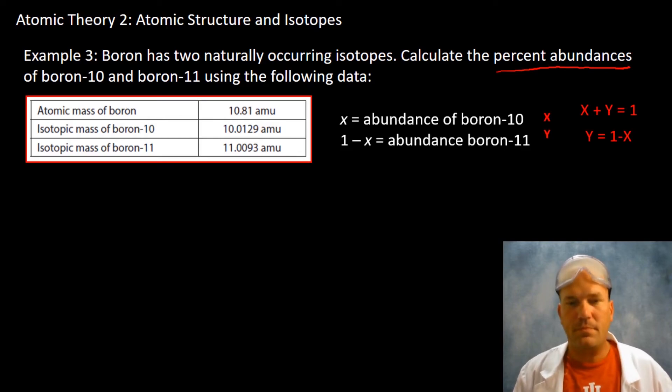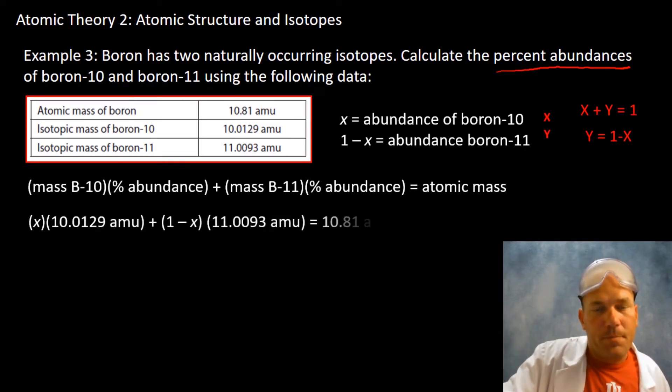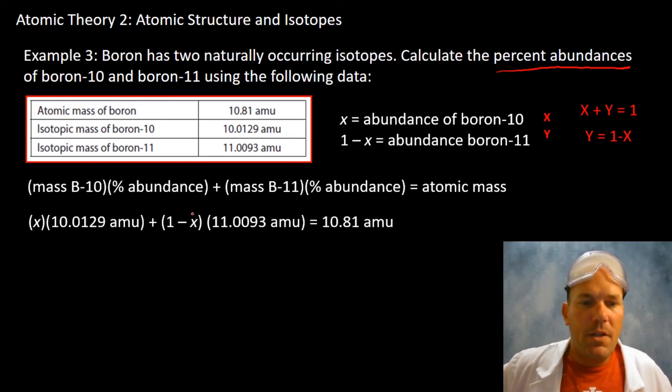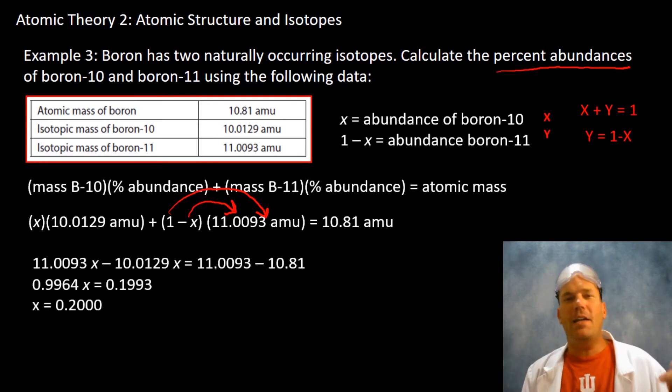Let's look at our plan again. The mass times the percent abundance. We don't know the abundancy, so we're going to be using our x variable and (1 minus x). You're going to be using the distributive property of multiplication, rearranging mathematically, combining like terms to get your final answer for x. But we're not done yet. x was boron-10. This problem says abundances for both. 1 minus 0.2 equals 0.8.